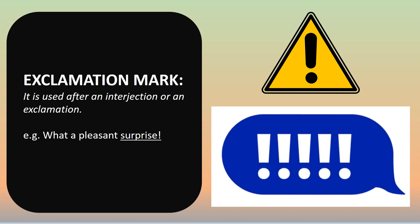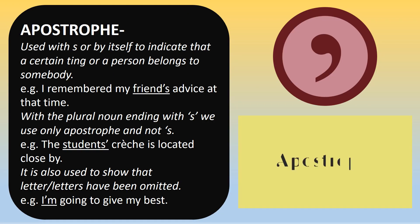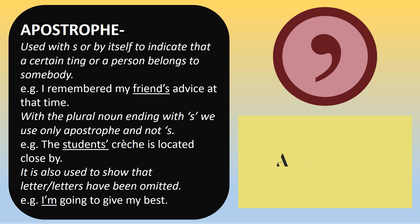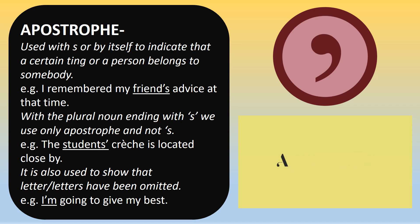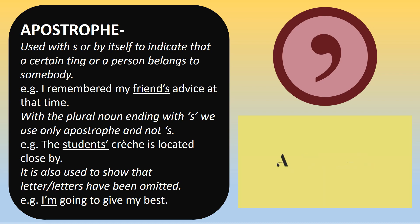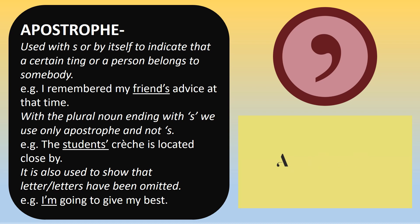Apostrophe: the apostrophe is a punctuation mark which is used with 's' or by itself to indicate possession or to show belonging. Example: 'I remembered my friend's advice at that time.' With a plural noun ending with 's', we use only the apostrophe and not 's'. Example: 'The students' crèche is located close by.' It is also used to show that a letter or letters have been omitted. Example: 'I'm going to give my best.' Here, in 'I'm', the letter 'a' is omitted.